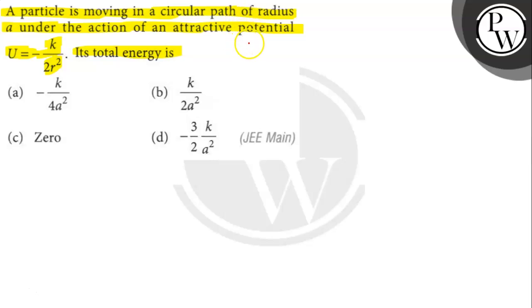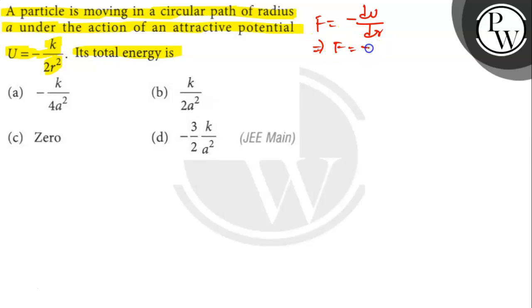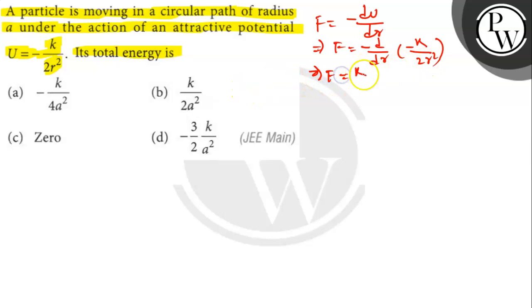We know that the force of attraction F equals minus dU by dr. Here the potential energy U is given in the question itself, that is U equals minus k by 2r square. So the force of attraction F equals minus dU by dr of minus k by 2r square. The minus signs cancel and taking the magnitude we get F equals k by r cube.